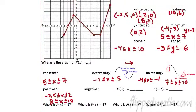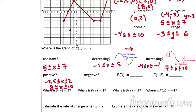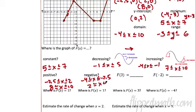Where is the graph negative? That means exactly what you think — where is it below the x-axis? That's from negative four to negative two point five. And also from two all the way to eight. So those are where the graph is negative. Negative means below the x-axis.